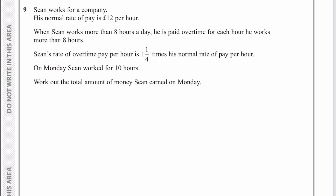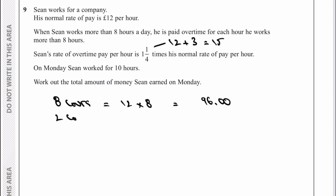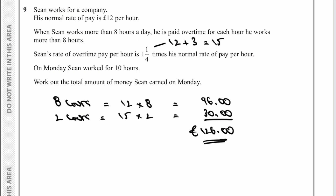Let's look at what he would be paid for those eight hours. At eight hours, he's paid £12 per hour, so that's 12 multiplied by 8, giving him £96. But he actually worked for a total of 10 hours, so he gets one and a quarter times his normal pay for that overtime. One and a quarter of £12 is £12 plus a quarter of £12, which is £3, so it's actually £15 an hour for the additional two hours. Two hours at £15 is £30, so for his total he's going to get £126. That would be the answer to question number 9.